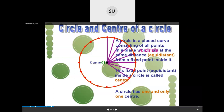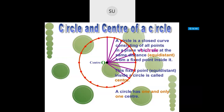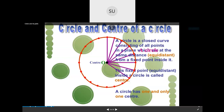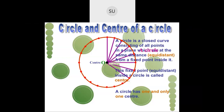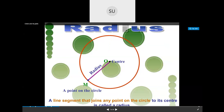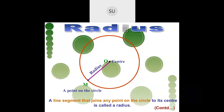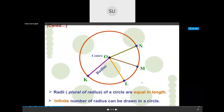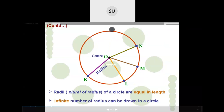The center of a circle: a circle is a closed curve where all points on it are at the same distance from a fixed point inside it. This fixed point is called the center. A circle has only one center. The radius is a line segment that joins the center of the circle to any point on the circle. All radii of a circle are equal in length, and you can draw an infinite number of radii.